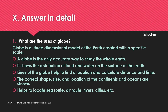What are the uses of a globe? A globe is a three-dimensional model of Earth created to a specific scale. A globe is the only accurate way to study the whole Earth.